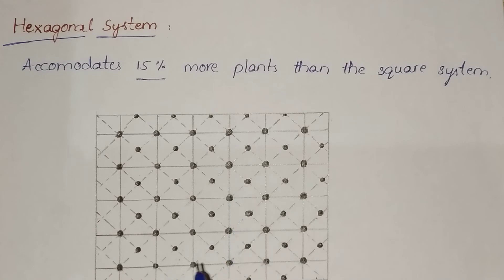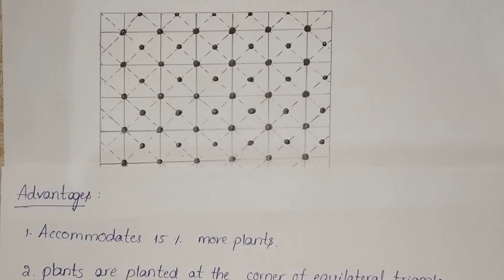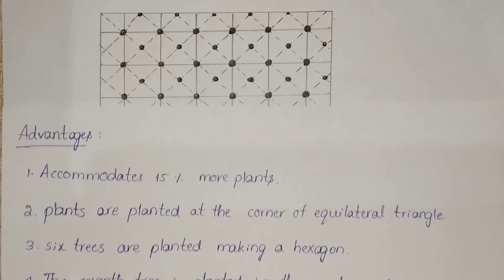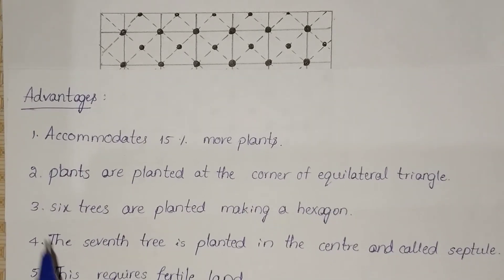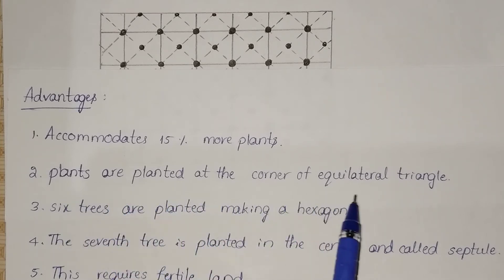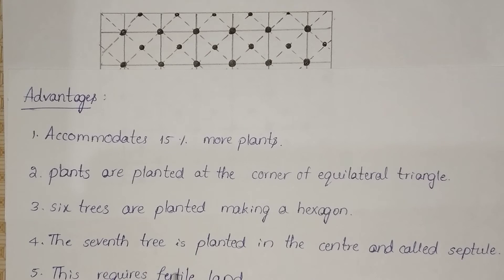Observe this diagram carefully. The hexagonal system has both advantages and disadvantages. Starting with advantages: it accommodates 15% more plants. Plants are planted at the corners of an equilateral triangle. Six trees are planted making a hexagon, and the seventh tree is planted in the center, called the septuple.